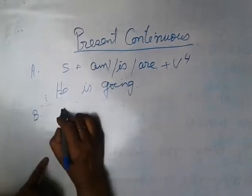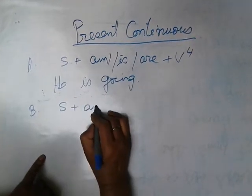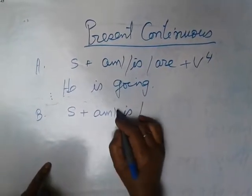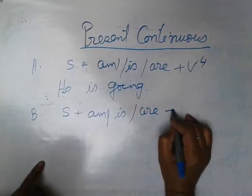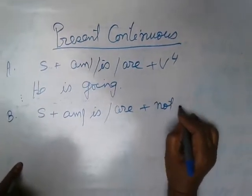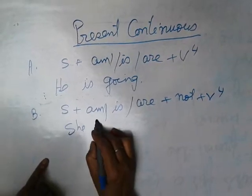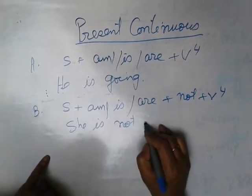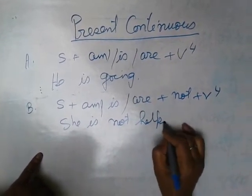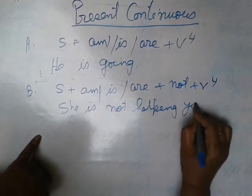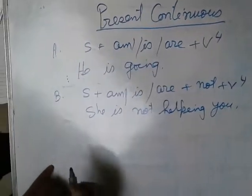Second is negative sentence. Subject plus am/is/are plus not plus V4. She is not helping you. This one is negative sentence.